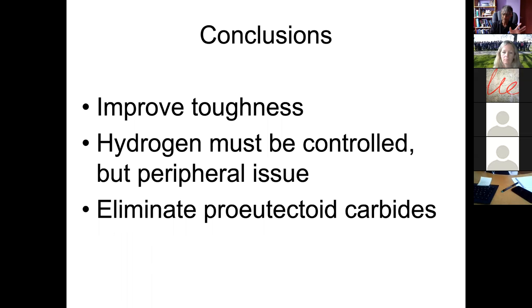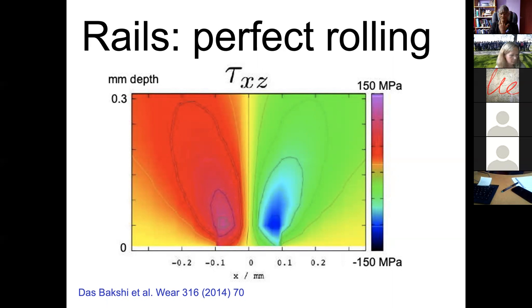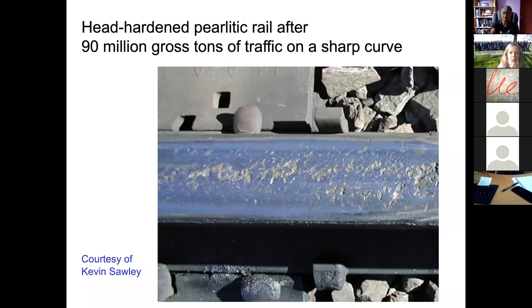Moving on to rails — the stress system again is completely different. This is a calculation of the shear stress below the surface. When you have perfect lubrication — simply rolling — the shear stress peaks under the surface. But rails are not lubricated: you've got metal against metal, and there is a significant amount of sliding involved. When you take account of the sliding, the maximum stresses move towards the surface, and therefore you've got to look at surface initiation as well. This is the sort of damage you get on a rail because of fatigue failure, and that damage can lead to catastrophic failure. What they usually do is grind that off periodically — you have a train with grinding equipment which removes the defect at periodic intervals.